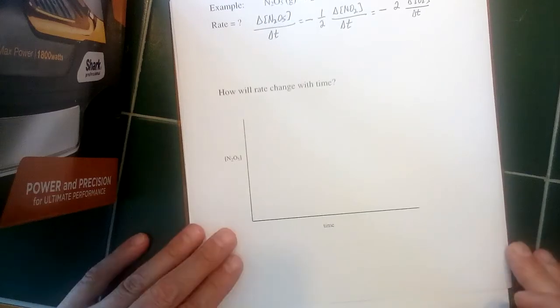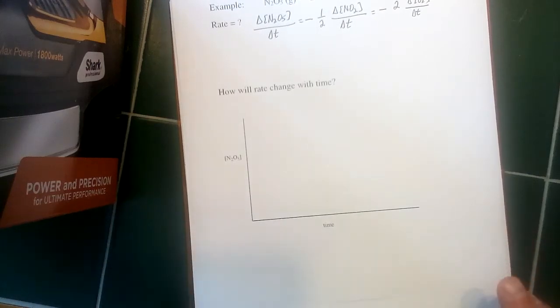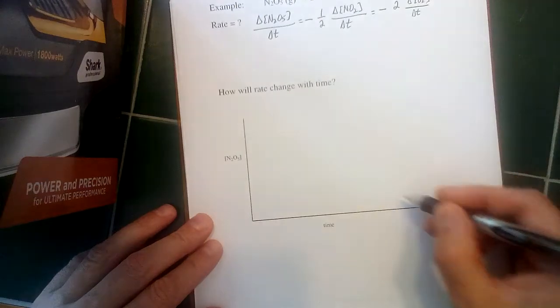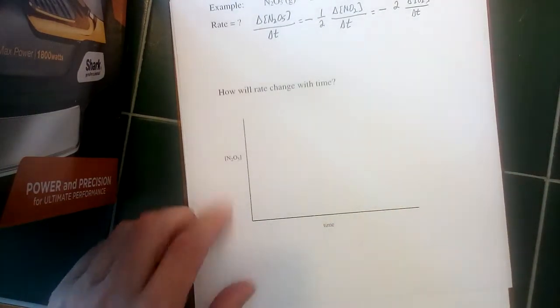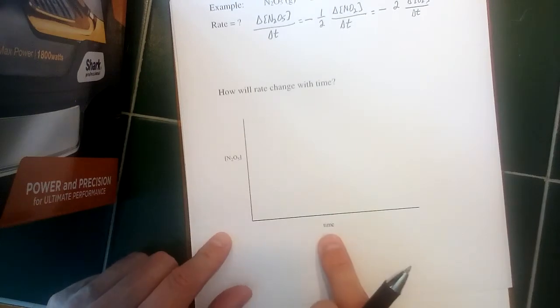Now, rate is not constant with respect to time, and it doesn't change in a linear fashion. So this relationship is not a straight line. On one axis here, I have the concentration of N2O5, the reactant. On the other axis, I have the amount of time that has passed.